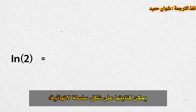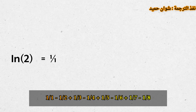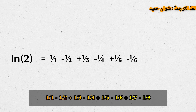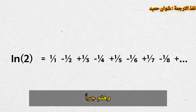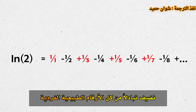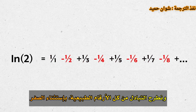The irrational number ln 2 can be written as the infinite series 1 over 1, minus 1 over 2, plus 1 over 3, minus 1 over 4, plus 1 over 5, minus 1 over 6, plus 1 over 7, minus 1 over 8, and so on. We're adding the reciprocals of all odd natural numbers and subtracting the reciprocals of all even natural numbers, with the exception of 0.